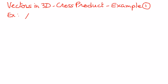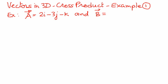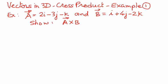In this example, if A is a vector which has components 2i minus 3j minus k, and if B is another vector with components i plus 4j minus 2k, we want to show one of the properties of cross products: that vector A cross vector B is equal to the negative of vector B cross vector A. We will show that the left hand side is equal to the right hand side.